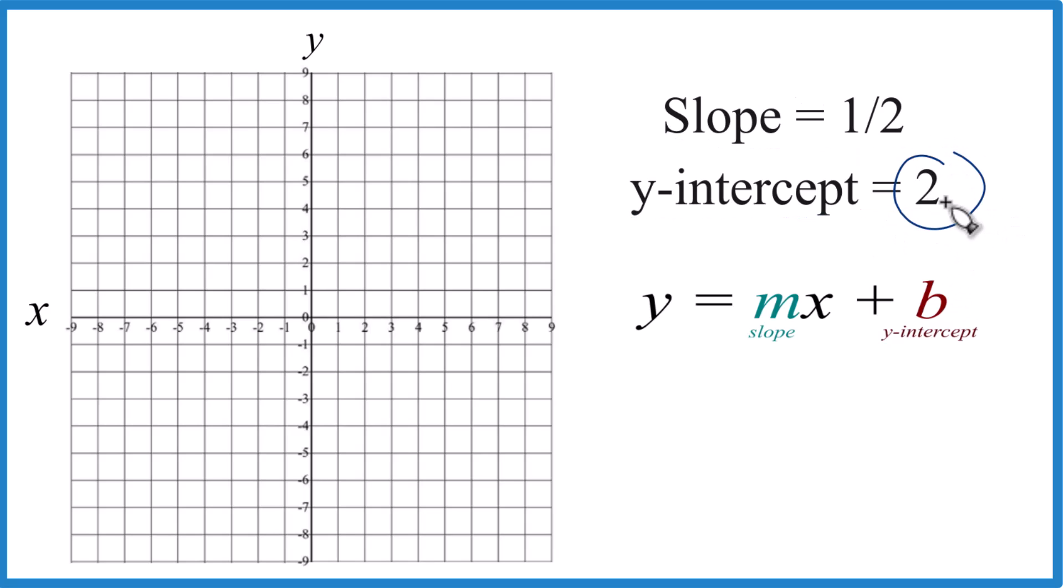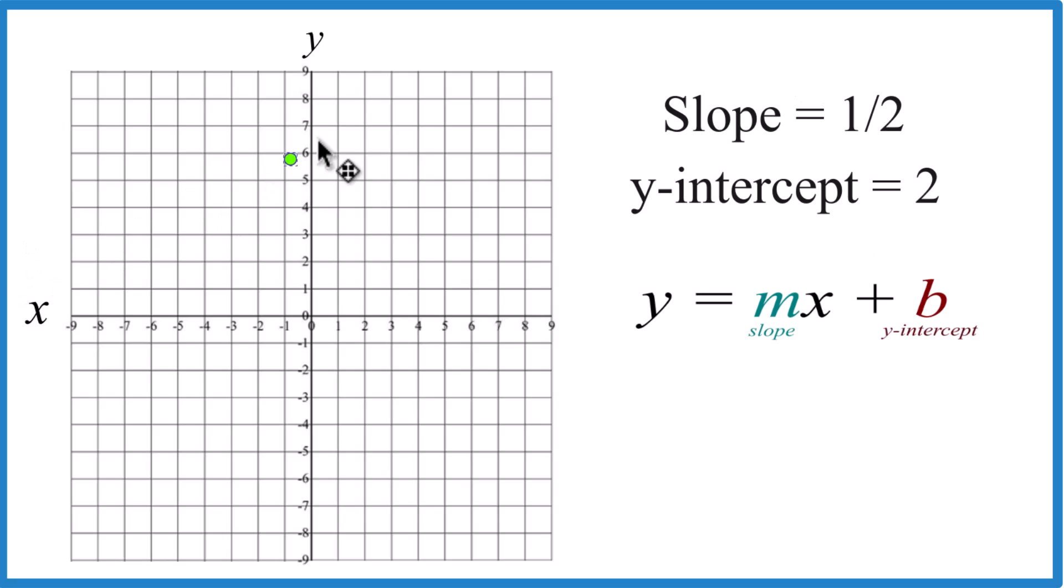So the y-intercept right here, that's two. That's where we're going to cross the y-axis, so we go down to two, right there.